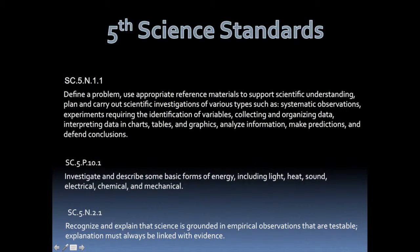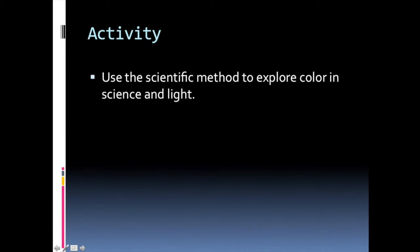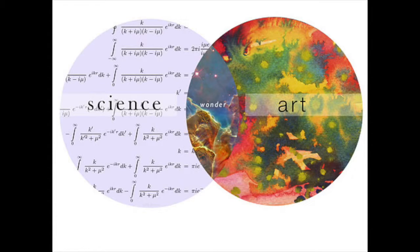For this specific unit on color theory, the coordinating science standards were designed for upper grade levels, so I had to change my game plan. Instead of using a light standard from science, I decided to use standards based on the scientific method and empirical observations. The coordinating art standards involved working collaboratively, using accurate art vocabulary, and problem-solving connections in non-art areas. Our activity was to use the scientific method to explore color in science and light and compare it to what we know about color in art and pigment.